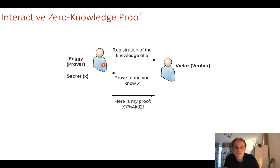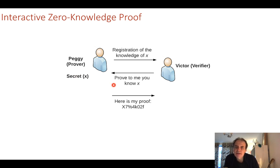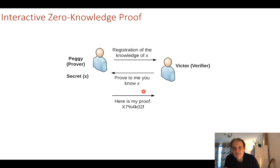This is called interactive because Victor will prompt Peggy to prove something and might give Peggy a challenge, of which she must prove that she knows a secret. We can make it non-interactive in that Peggy, whenever she wants to register for a service or login, would pass a proof based on something to Victor, and Victor can automatically verify that proof.